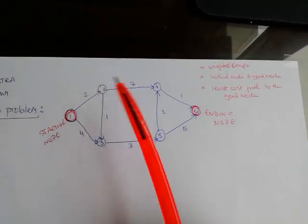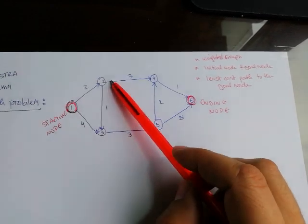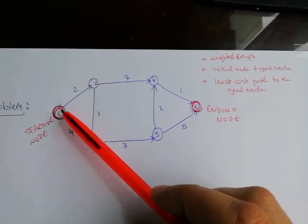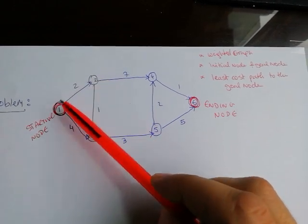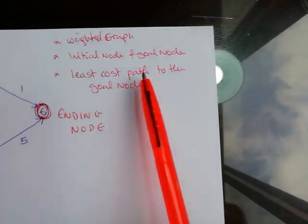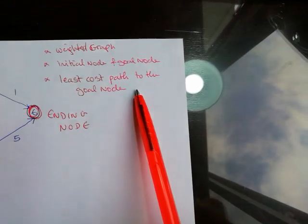We have to obey the arrow direction, so we can go from one to two but can't go from two to one. The flow always has to go from one to two, never from two to one, as the arrow dictates. We need to find the least cost path to the goal node.